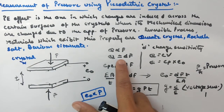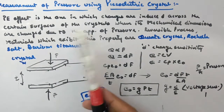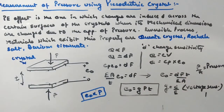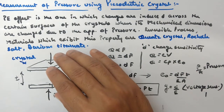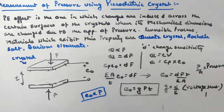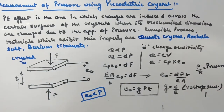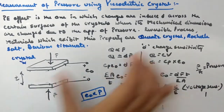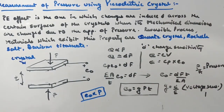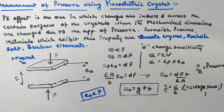That is how you derive the expression for measuring pressure using a piezoelectric crystal. The main drawback of this method is that it is only used to measure dynamic pressures. If you have a static pressure, it will not measure it — it requires a dynamic change in pressure. This is the biggest drawback of this method. The expression E₀ = g·p·t is also commonly used in numerical problems.